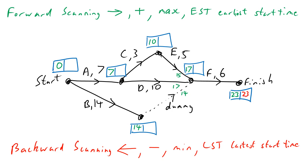Now backward scanning starts with the same number in the right-hand box — put it in red. Going backwards against the arrow, subtracting, and finding the minimum when there's a choice: 23−6 = 17; going up the top, 17−5 = 12; then 12−3 = 9; 17−10 = 7. Two options — choose the minimum, which is 7; 7−7 = 0. Going back through the bottom path: 17−0 = 17; 17−14 = 3. Choice of 0 or 3 — choose 0. The numbers at start and finish must match, and at the start they're both 0, so if you've done something wrong you'll find it right there.